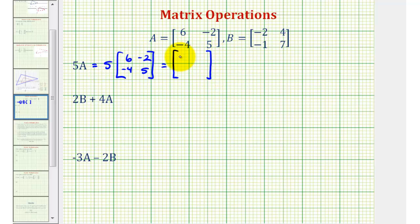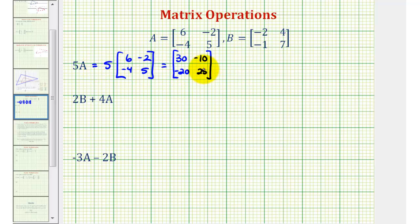Five times six is 30. Five times negative two is negative 10. Five times negative four is negative 20. And five times five is 25. This would be our matrix five A.